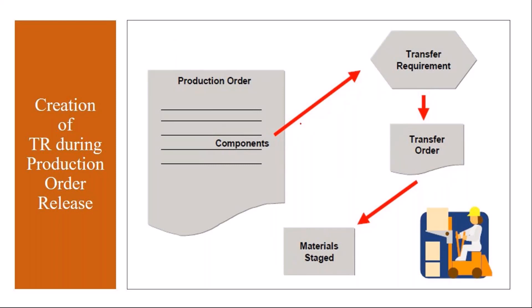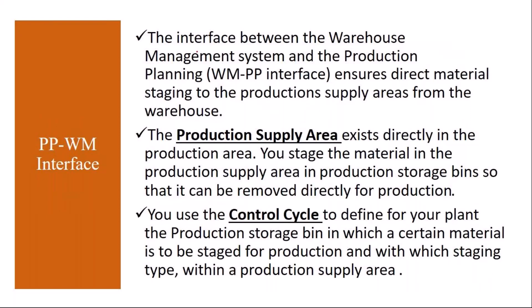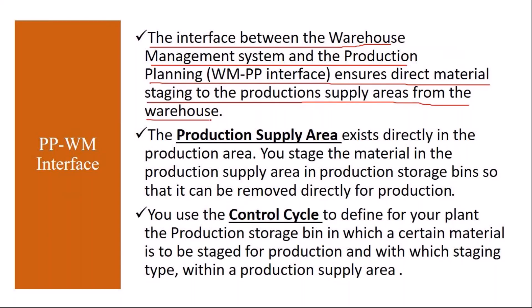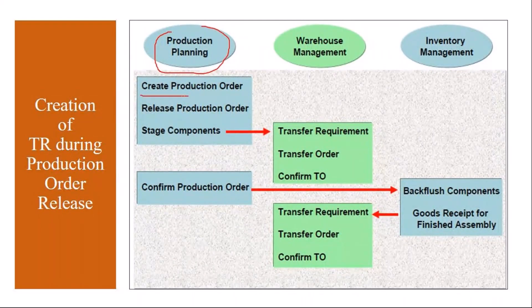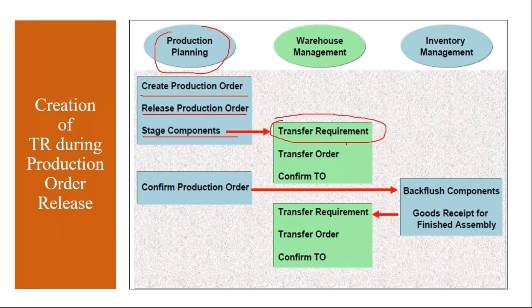We will also cover the settings required — what master data and configuration settings we have to do from the PP side and the WM side. The interface between the warehouse management system and production planning ensures direct material staging to the production supply areas from the warehouse. The flow is: from PP we create and release the production order, then a transfer requirement is generated, which is converted to a transfer order, confirmed, and stocks are moved — this all happens in WM.